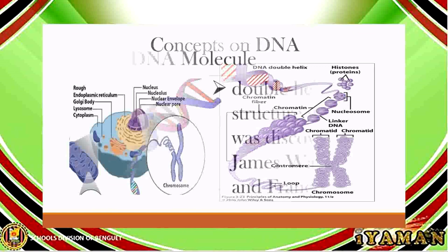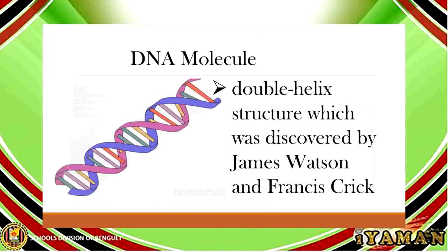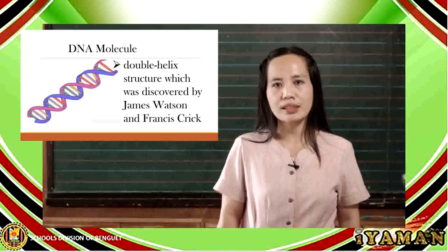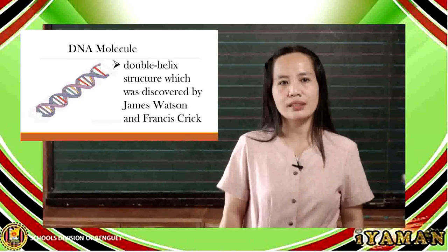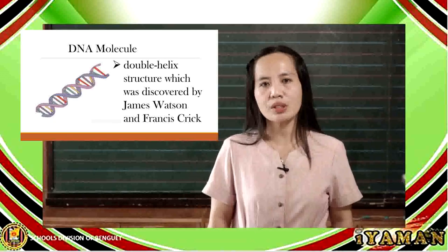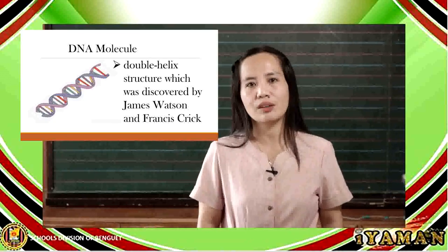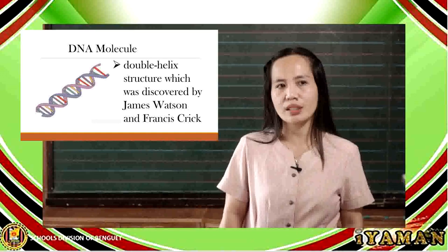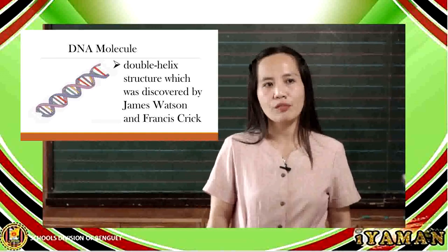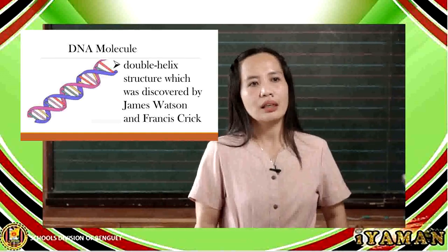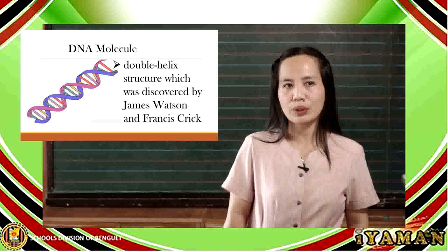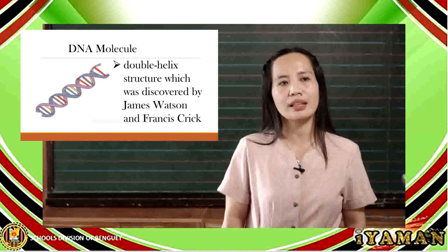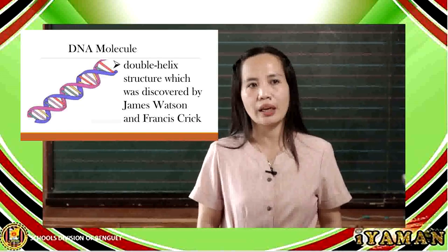The DNA molecule is described as a double helix structure, and that was discovered by two scientists: James Watson and Francis Crick. As you can see, we have here a twisted ladder-like structure, and that represents the structure of the DNA.